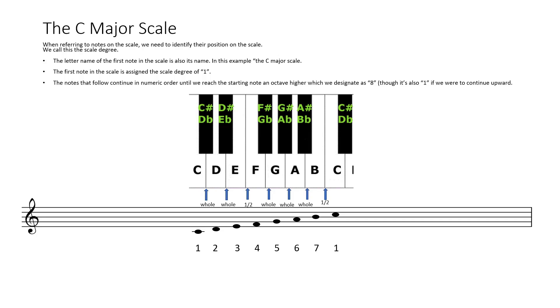When referring to notes on the scale, we need to identify their position in the scale. We call this the scale degree. The letter name of the first note in the scale is also its name. In this example, the C major scale, the first note in the scale is assigned the scale degree of one, and that is C.